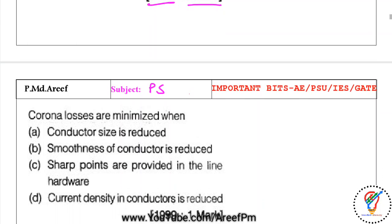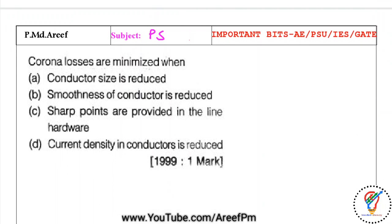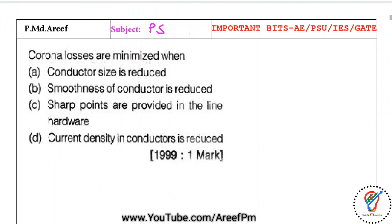The next question — corona losses can be minimized — was asked in Gate 1999 for one mark and repeated in SSC JE. Corona losses can be minimized when the current density in the conductors is reduced. This is a straightforward question we have discussed previously.